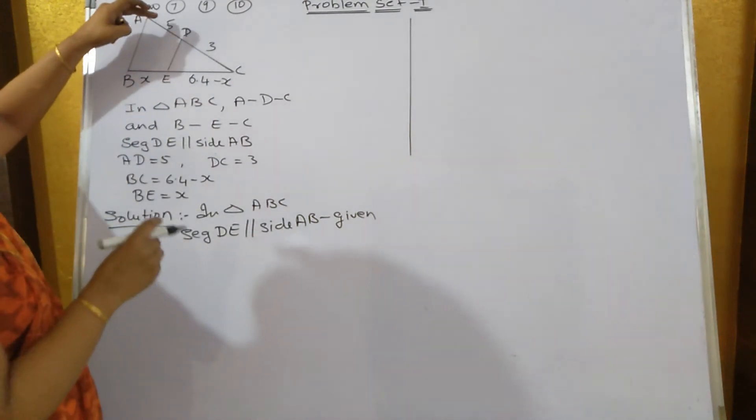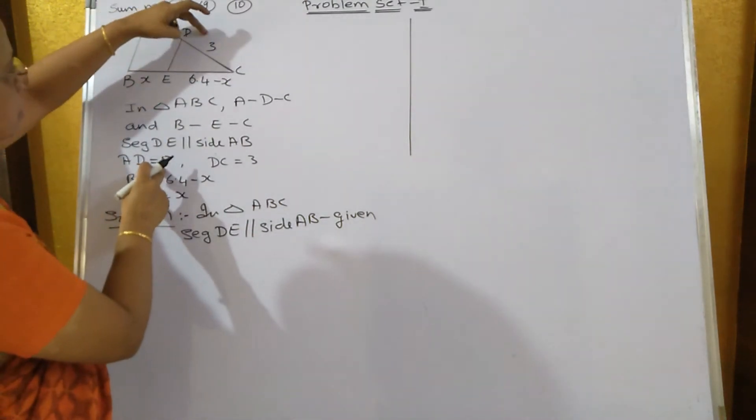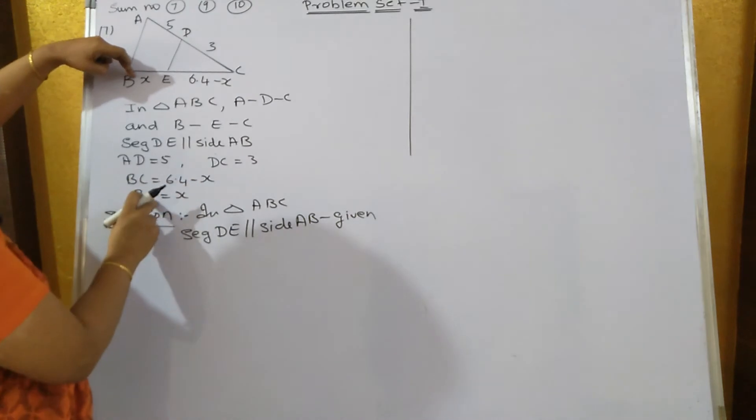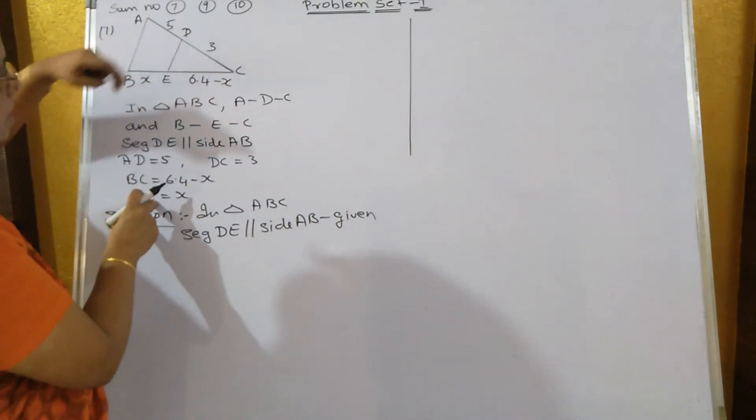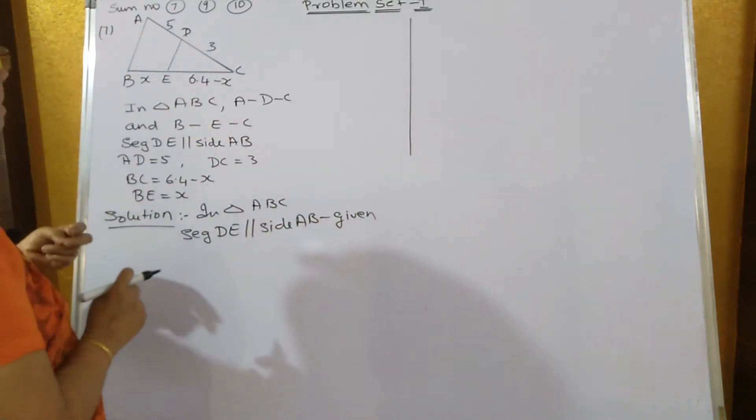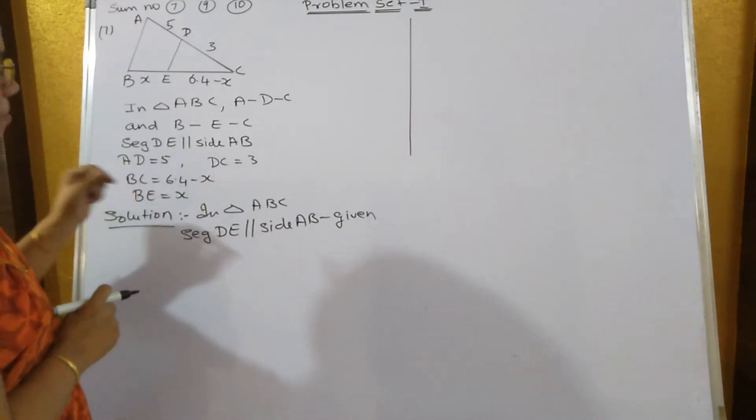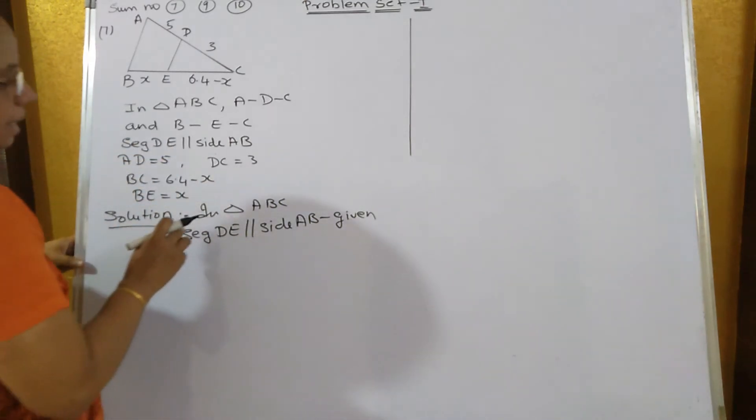In the figure AD is equal to 5, DC is equal to 3, BE is equal to X and EC is equal to 6.4 minus X and they have given DE is parallel to side AB.